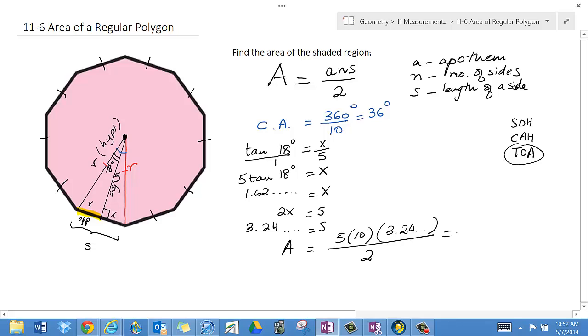So if I just plug that into my calculator, or if the answer that I have, I multiply that by 5 and then 10 and divide the answer by 2, I get 81.22, etc., and I can round that to one decimal place, so my answer is 81.2 units squared.